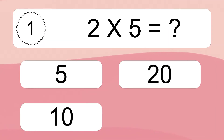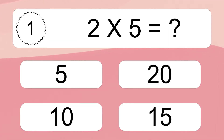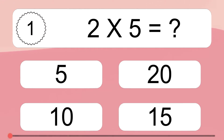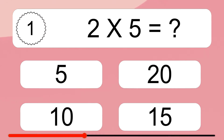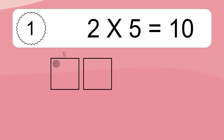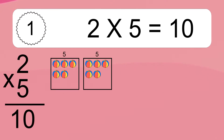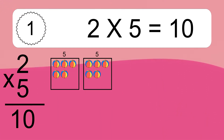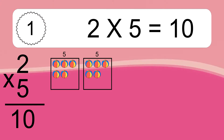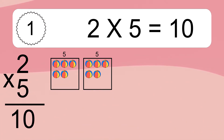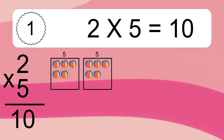2 times 5 equals what? 2 times 5 equals 10. We have 2 boxes, and each box has 5 colorful balls inside. If you count all the balls in all the boxes together, you will have 2 times 5 balls. This equals 10 balls.